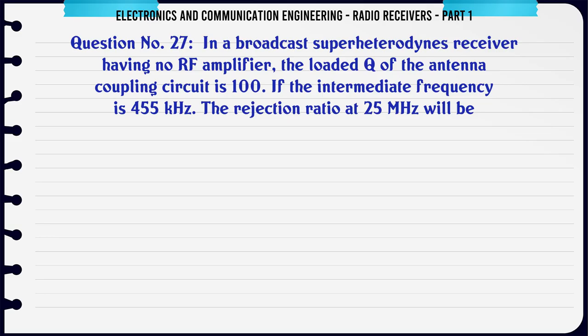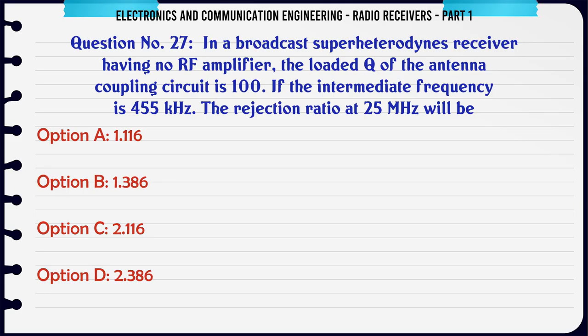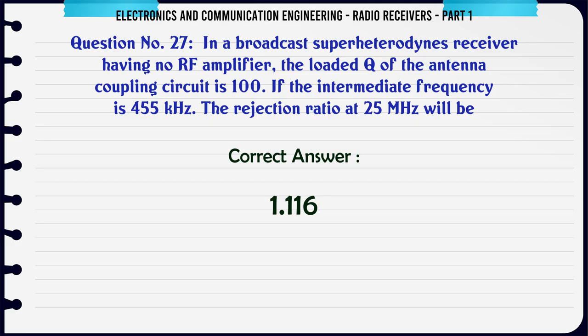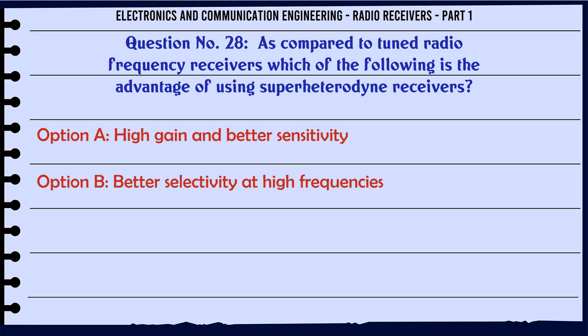In a broadcast superheterodyne receiver having no RF amplifier, the loaded Q of the antenna coupling circuit is 100. If the intermediate frequency is 455 kHz, the rejection ratio at 25 MHz will be: A. 1.116. B. 1.386. C. 2.116. D. 2.386. The correct answer is 1.116.